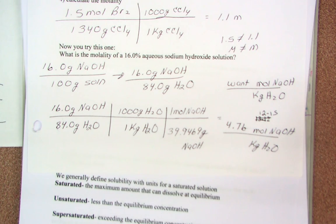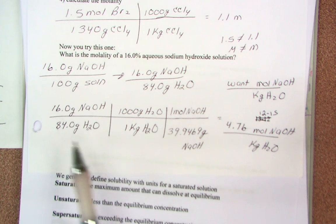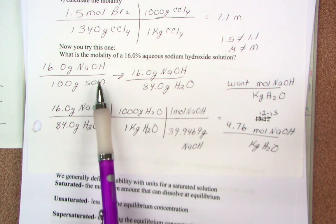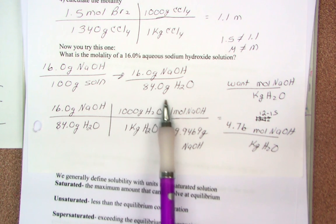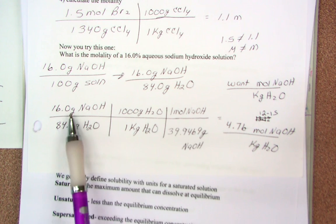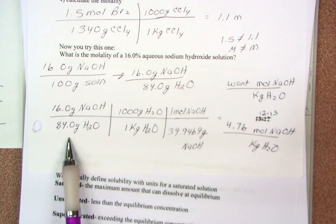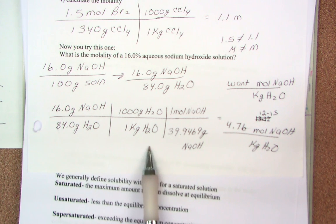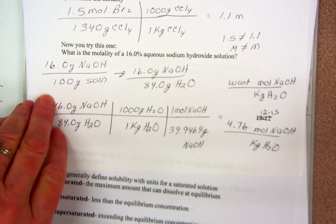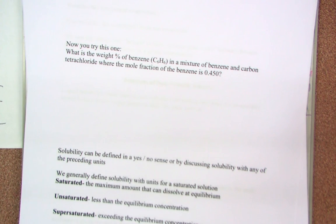Looks like everybody got the same answer. When we look at this we know 16 grams of sodium hydroxide per 84 grams of water. We can change grams into moles and grams of water into kilograms and we get 4.76 molality. I think the molality problems are the most difficult because you have the addition and subtraction.